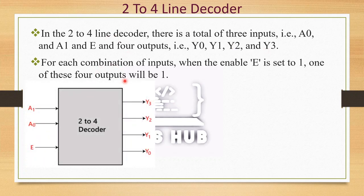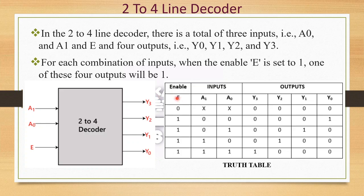This is the block diagram of the 2-to-4 decoder. The two inputs are A1 and A0, and the outputs are Y0, Y1, Y2, and Y3. There is also an enable pin E. If the enable value is 0, whatever the values of A0 and A1 may be, nothing will be produced as output.